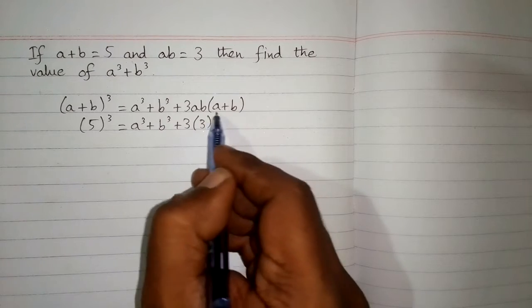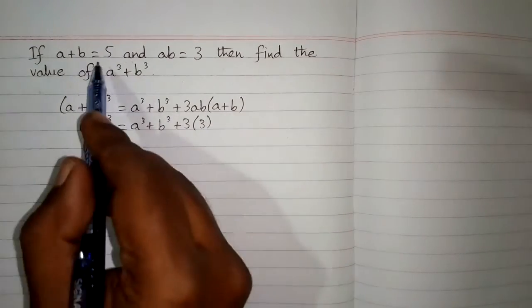So you will write 3 over here, and again we will put the value of a plus b which is 5.